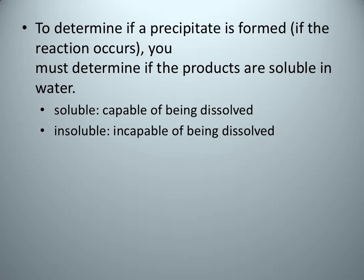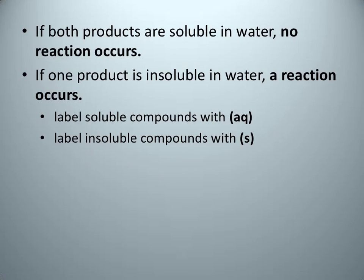How do we know if a precipitate is formed? We're going to look to see if one of the products is insoluble, meaning incapable of being dissolved. The insoluble substance will be our precipitate. If both products are soluble in water, then we don't have a chemical reaction at all — no precipitate is formed. If one of the products is insoluble, then we have a precipitation reaction, and we label the precipitate with an S for solid. The other substance will be soluble and labeled with AQ for aqueous solution.